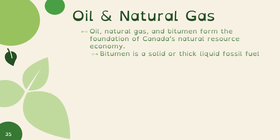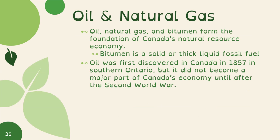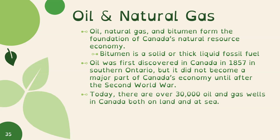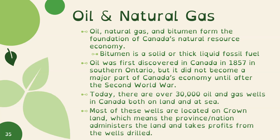Oil, natural gas, and bitumen form the foundation of Canada's natural resource economy. Bitumen is a solid or thick liquid fossil fuel. Oil was first discovered in Canada in 1857 in Southern Ontario, but it did not become a major part of Canada's economy until after the Second World War. Today, there are over 30,000 oil and gas wells in Canada, both on land and at sea. Most are located on Crown land, meaning the province or nation administers the land and takes profits from the wells drilled.